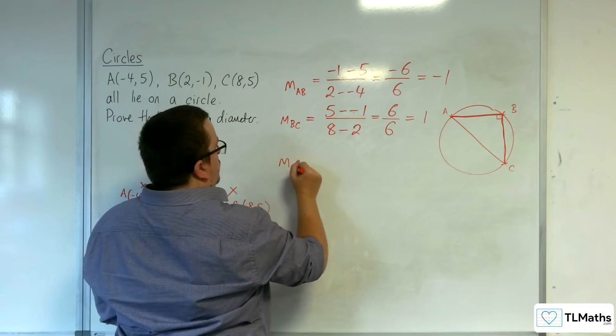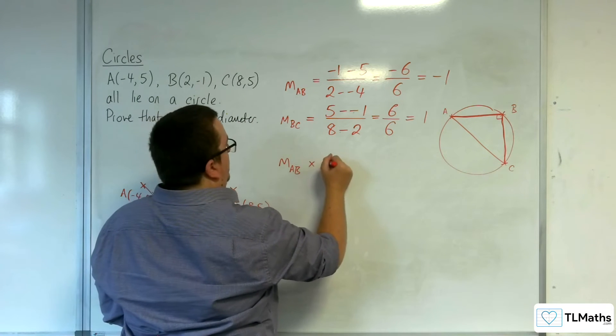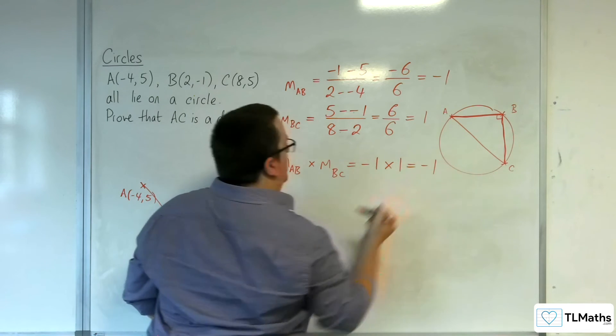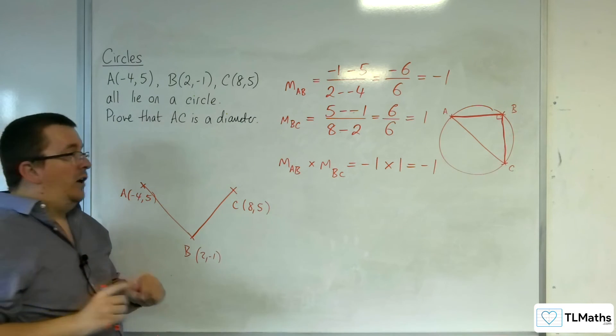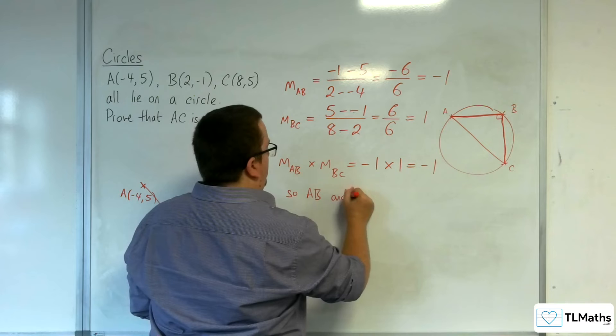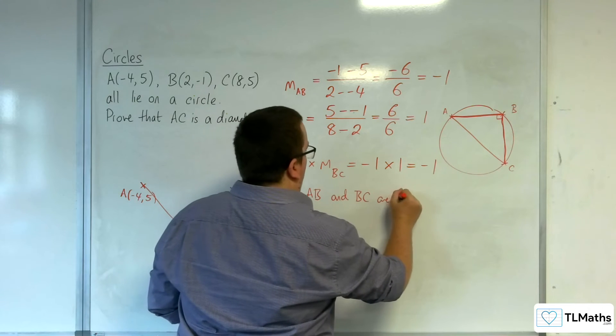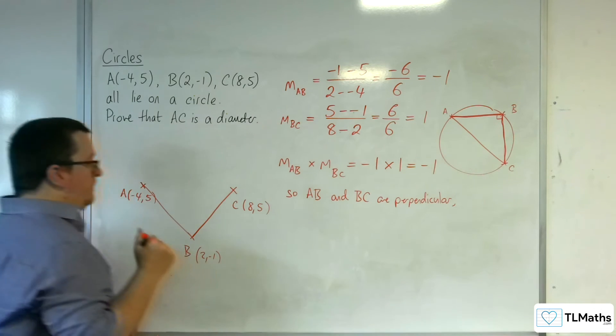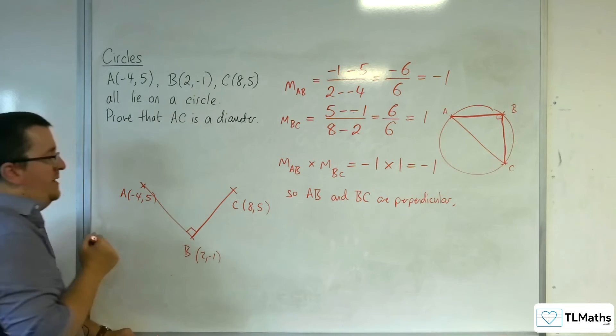So, the gradient of AB times by the gradient of BC is minus one times one, which of course is minus one. So, AB and BC are perpendicular. So, because they are perpendicular,